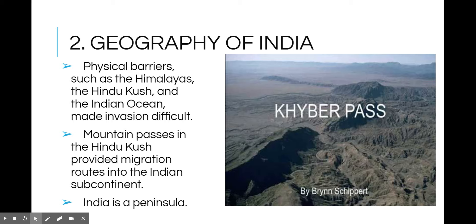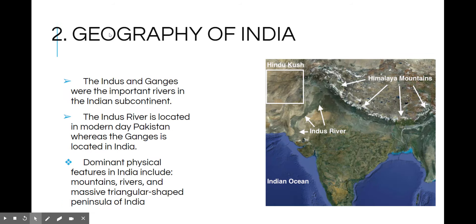India is a peninsula, and a peninsula is a body of land surrounded on three sides by water. The Indus and the Ganges are very important rivers — they are the lifeblood of this region. They provide rich, fertile soil, water, and protection.